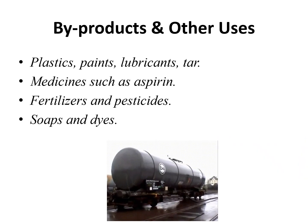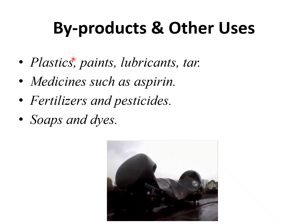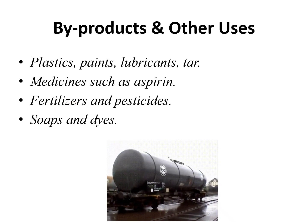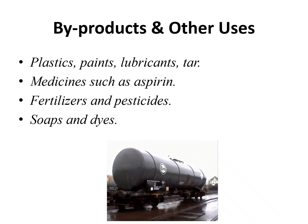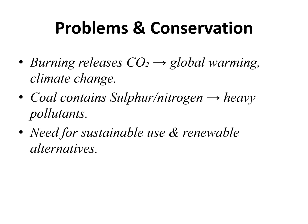We can also see that the byproducts of fossil fuels have other uses. Number one, we have plastics — fossil fuels can be used in making plastics, paints, lubricants, and tar. They are used as medicines such as aspirin, as fertilizers, and as pesticides. They are also used in making soaps and dyes. So you can see how very important our fossil fuels are to us — even medicines, even fertilizers, and we know agriculture is the backbone of Uganda.